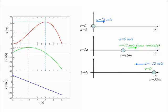At t equals four seconds, the velocity is zero. The particle has stopped. The position coordinate has reached its maximum value. From then on, both v and a are negative. Therefore, the particle starts to move in the negative direction with increasing speed.